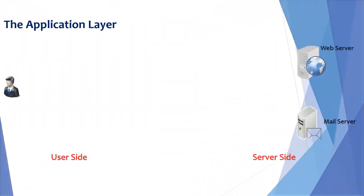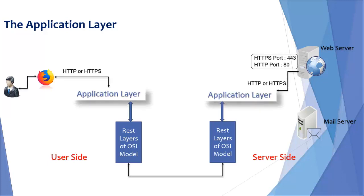Let's take a graphical example of application layer use. Suppose there is a user and he wants to surf a website. When he types the address in Mozilla Firefox or any browser, the browser application picks the appropriate protocol using application layer — it may be HTTP or HTTPS.